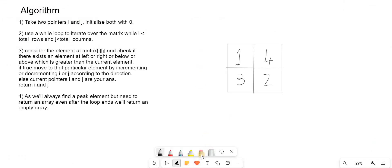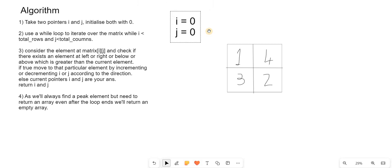Now let's understand the algorithm. We take two pointers i and j, both initialized to 0. Then we use a while loop to iterate while i is less than the total number of rows and j is less than the total number of columns. We consider the element at matrix[i][j] and check if any neighbor — left, right, below, or above — is greater than the current element. If true, we move to that element by incrementing or decrementing i or j. Otherwise, the current i and j are our answer. We return an empty array after the loop ends.